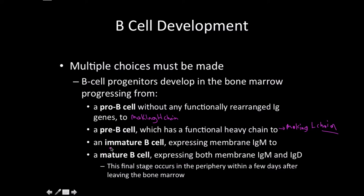After that, we're going to develop further into a mature B cell, which is going to be expressing both membrane IgM and IgD. This is the final stage that's going to occur in the periphery within a few days after leaving the bone marrow, and then go off to fight an infection if need be.